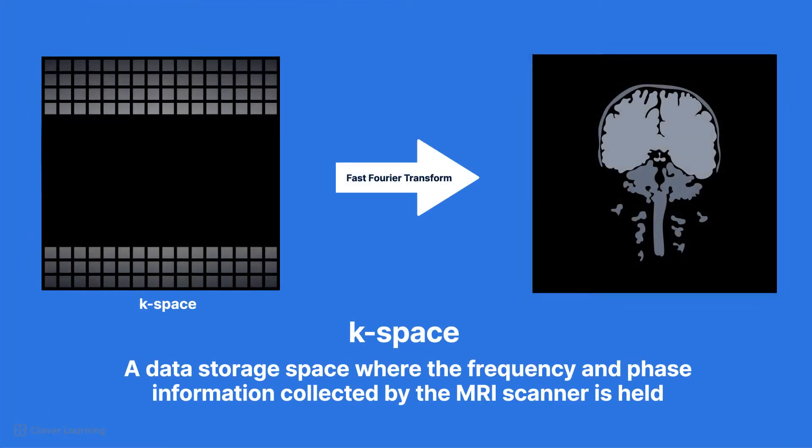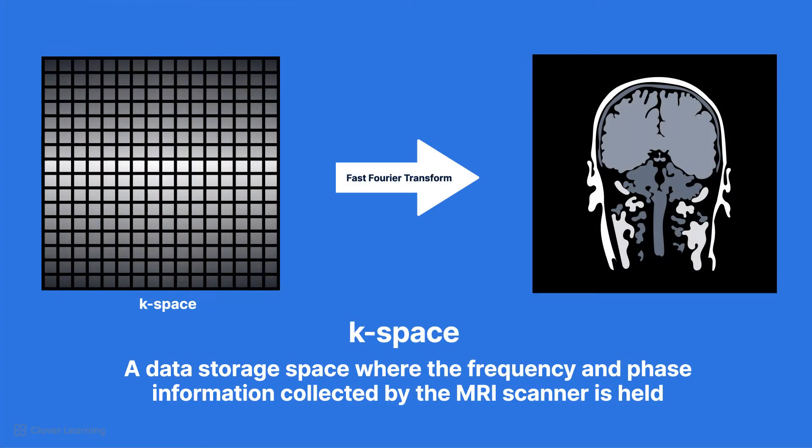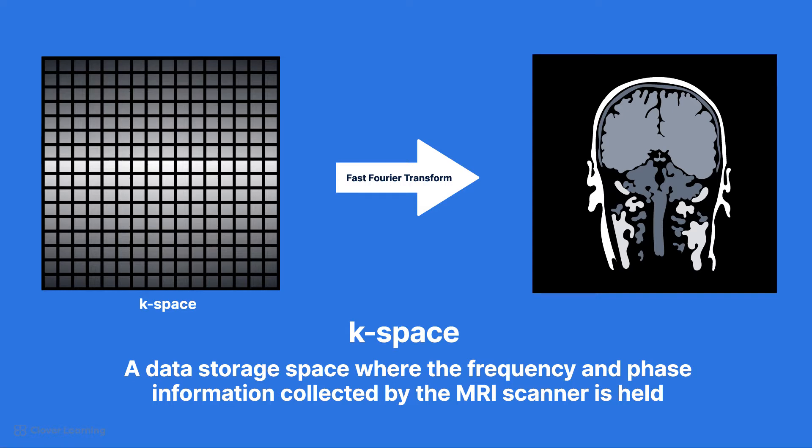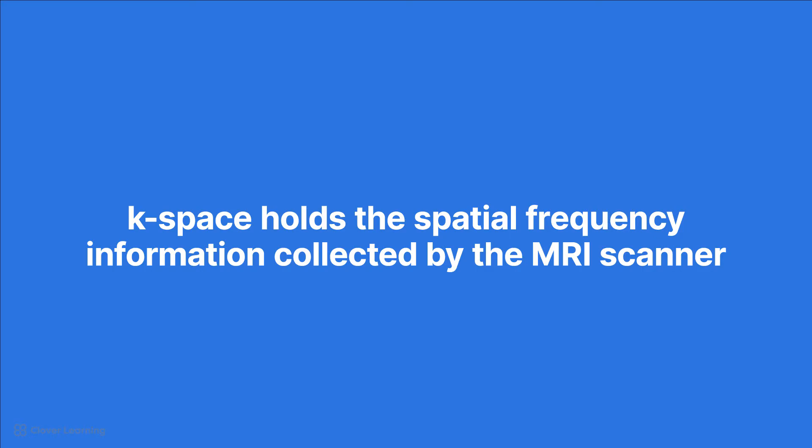K-space is not a physical space, but a data storage space where the frequency and phase information collected by the MRI scanner is held. The data is later transformed back into an image that represents the actual anatomy. Another way of thinking about it is that k-space holds the spatial frequency information collected by the MRI scanner.